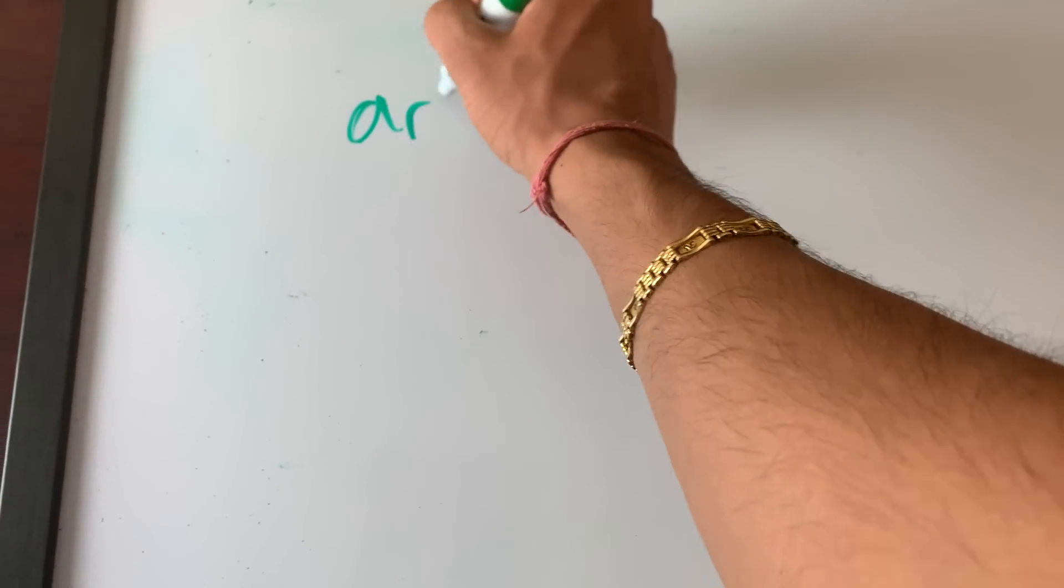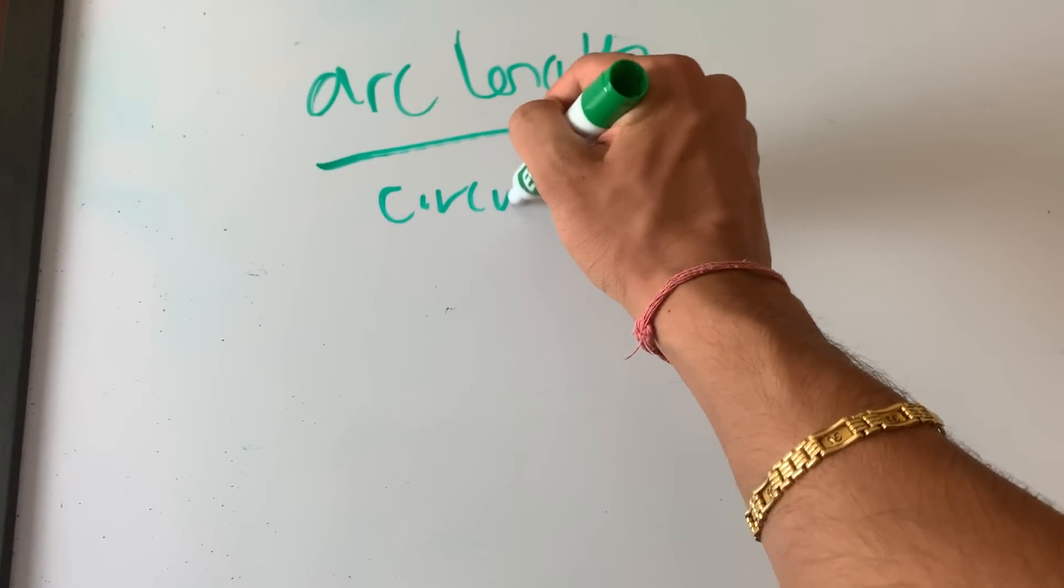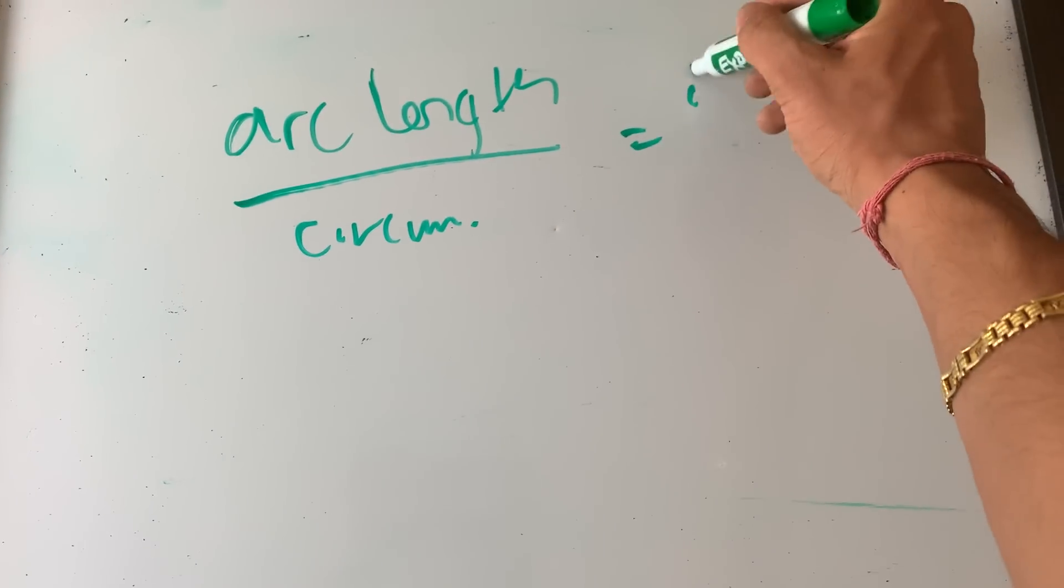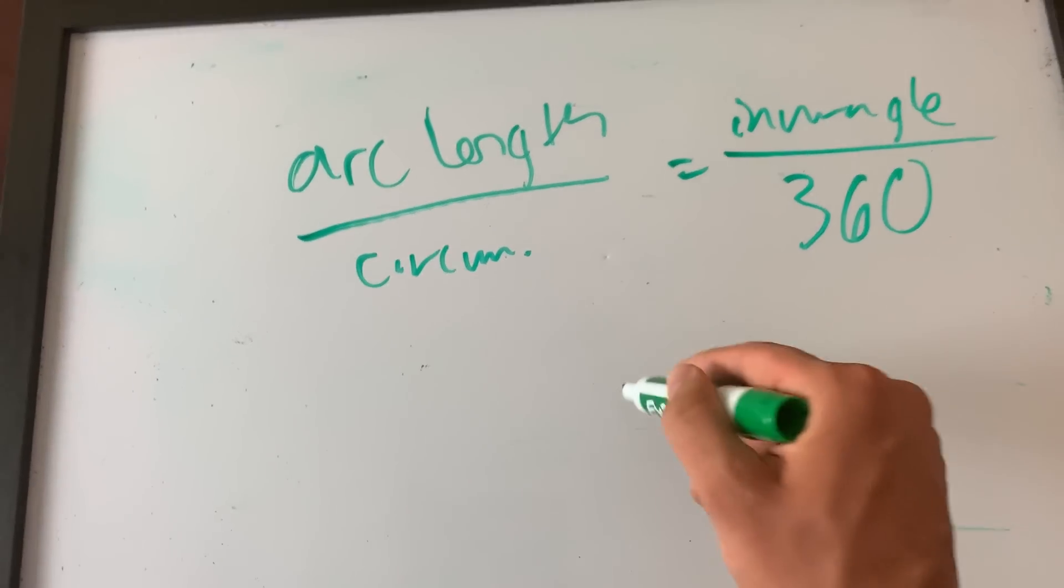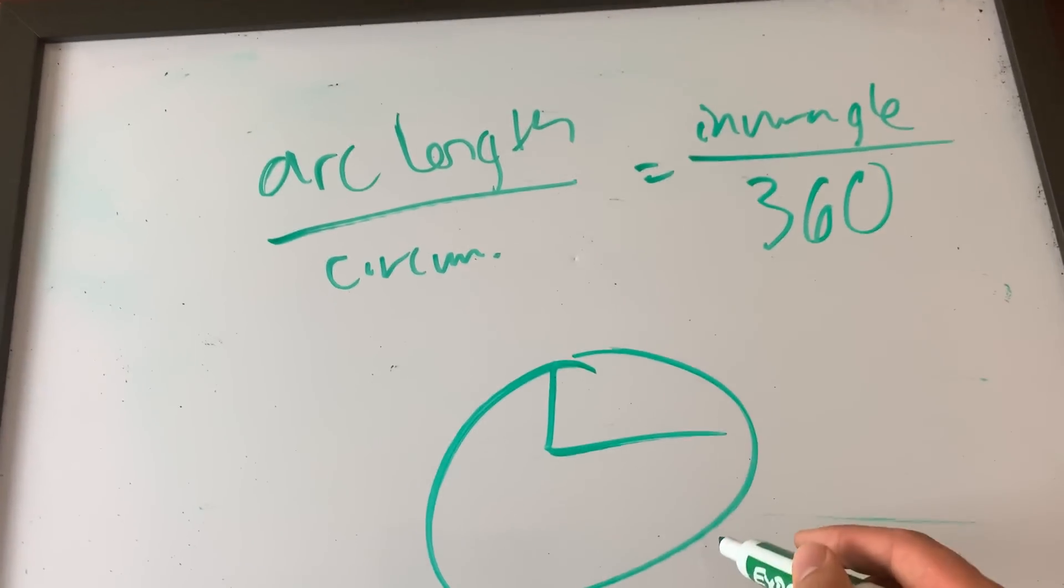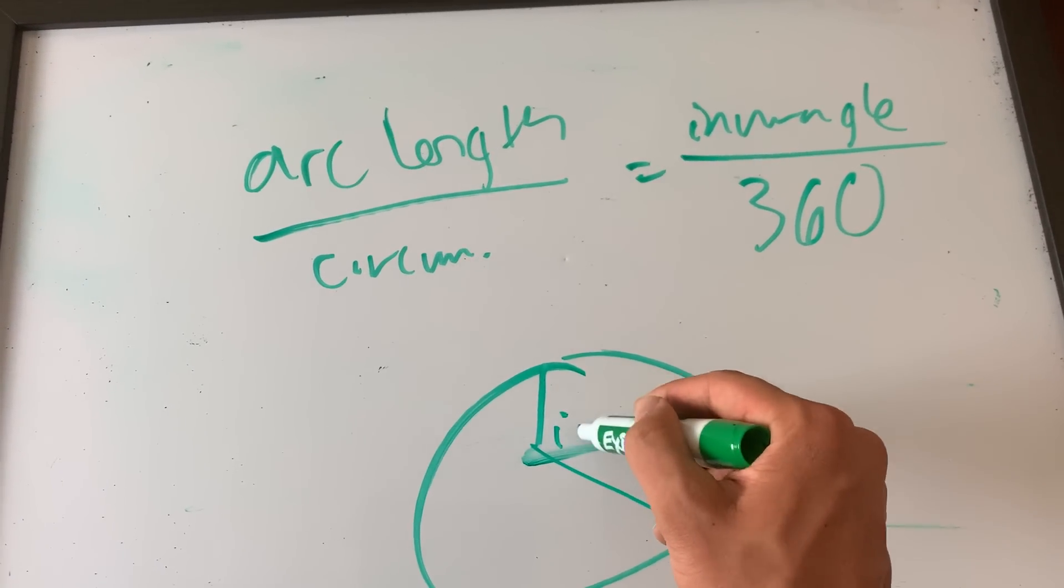The next thing, this is for circles. You see this on calc or non-calc. Arc length over circumference is equal to inner angle over 360. Look at that handwriting. I'll give you a circle.